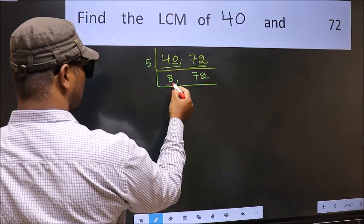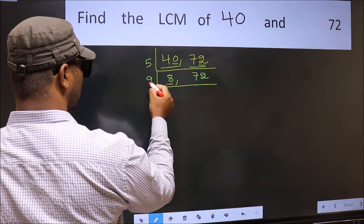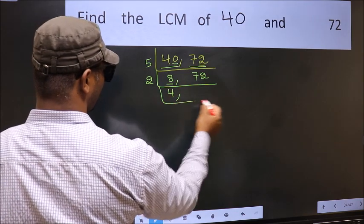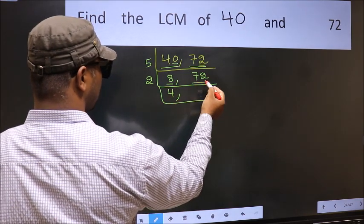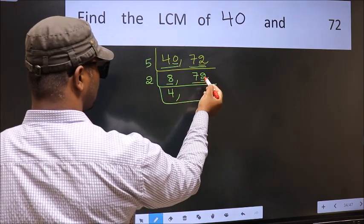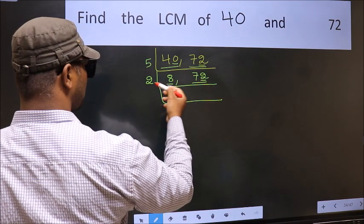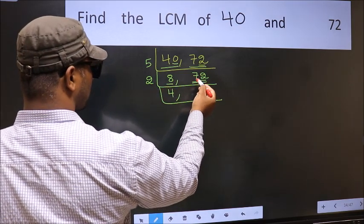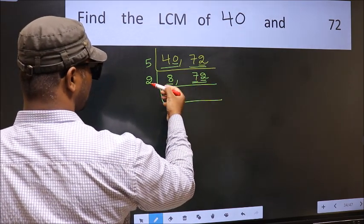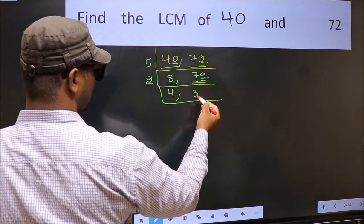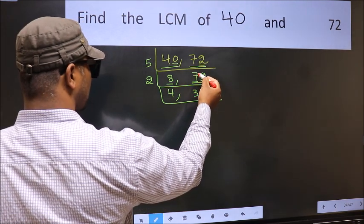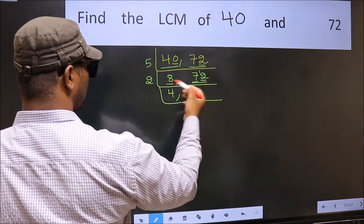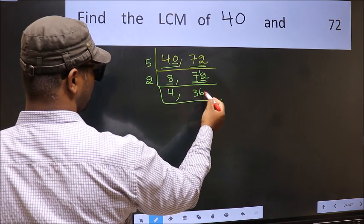Now here we have 8. 8 is 2 times 4, giving 8. The other number, 72, last digit 2, which is even, so it is divisible by 2. For the first number, 7 — a number close to 7 in the 2 table is 2 times 3 is 6. 7 minus 6 is 1, carried forward gives 12. When do we get 12 in the 2 table? 2 times 6 is 12.